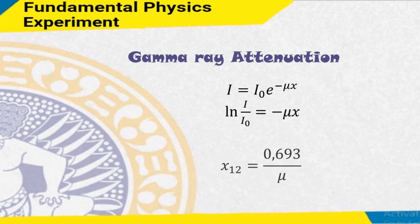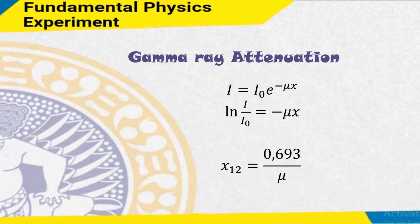Gamma attenuation: the attenuation of a gamma beam is defined as the fraction of rays which pass through and are absorbed without interacting. When gamma rays are incident on a material, the rays will interact with the material through the photoelectric effect, the Compton effect, or the ion-pair effect. These effects may occur together, or only one or two of the three, depending on the energy of the light.